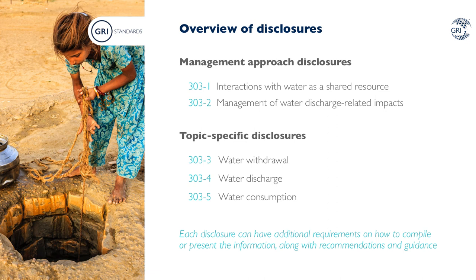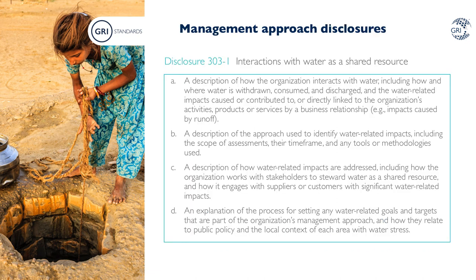The next slides give an overview of the information requested in each of these disclosures. Disclosure 303-1 requests an organization to disclose narrative information about how it interacts with water as a shared resource — to understand the importance of water to the organization overall, the impact it may have, and how the organization mitigates that impact. It requests organizations to describe how and where water is withdrawn, consumed and discharged, and the water-related impacts caused or contributed to by the organization's activities, products or services. It also covers the approach used to identify water-related impacts, including the scope of assessments, their timeframe and any tools or methodologies used.